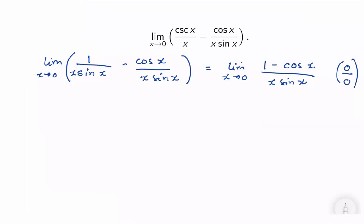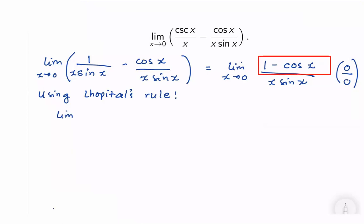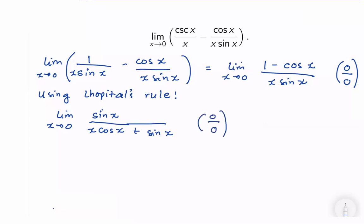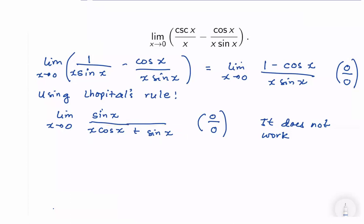If we try L'Hôpital's rule, we get the limit of sin x over (x·cos x plus sin x). However, this is still of the form 0 over 0, and applying L'Hôpital's rule again would be even more difficult. So we try another method: multiply both numerator and denominator by 1 plus cosine x.